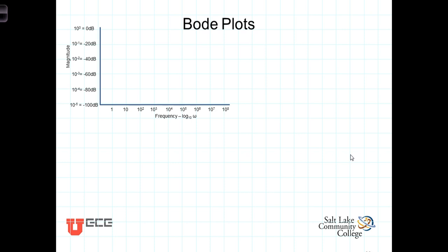The plot of the frequency response using logarithmic scaling is known as the Bode plot. The Bode plot consists of a horizontal axis of omega graphed on a log scale. On a log scale, the constant separation represents a multiple of — in the case of base 10 — a multiple of 10.